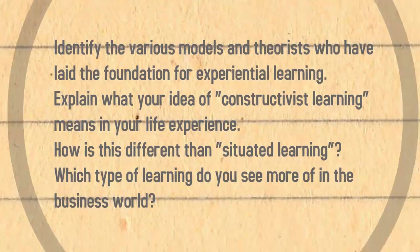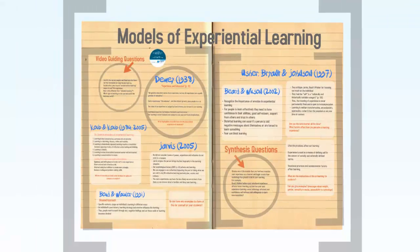Here are some of the models of experiential learning that we'll be looking at today. Dewey, who talked about learning from life experience. Kolb, who was a constructivist. Jarvis, who was a constructivist as well. Boot and Walker, who talked about situated learning. Beard and Wilson, who dealt with emotions in experiential learning. And Usher, Bryant and Johnson, who also talked about situated learning.